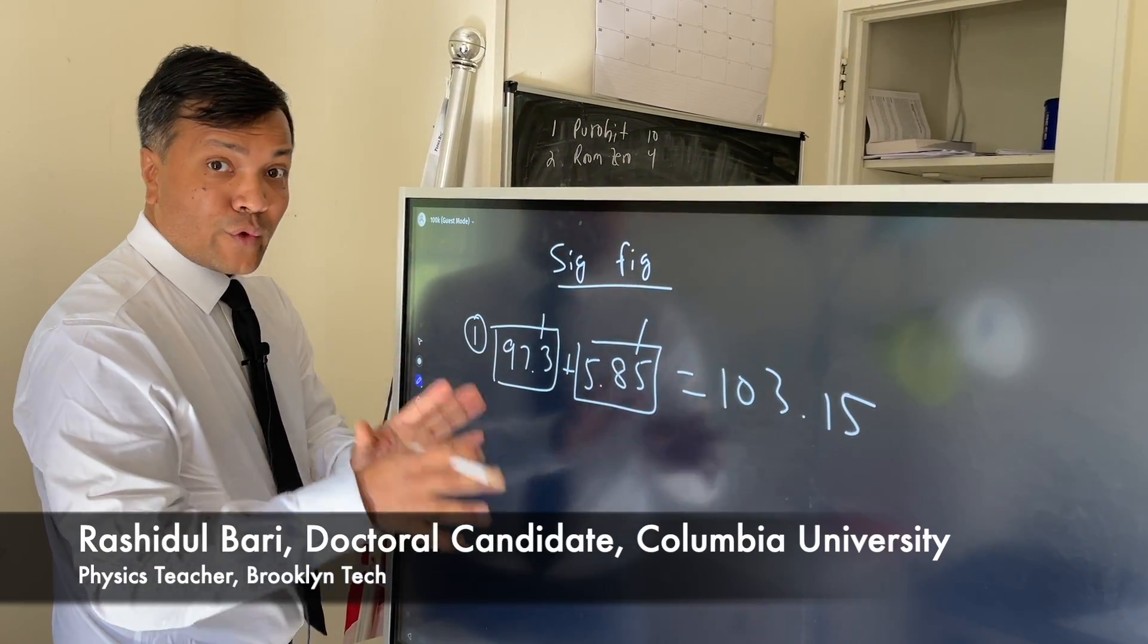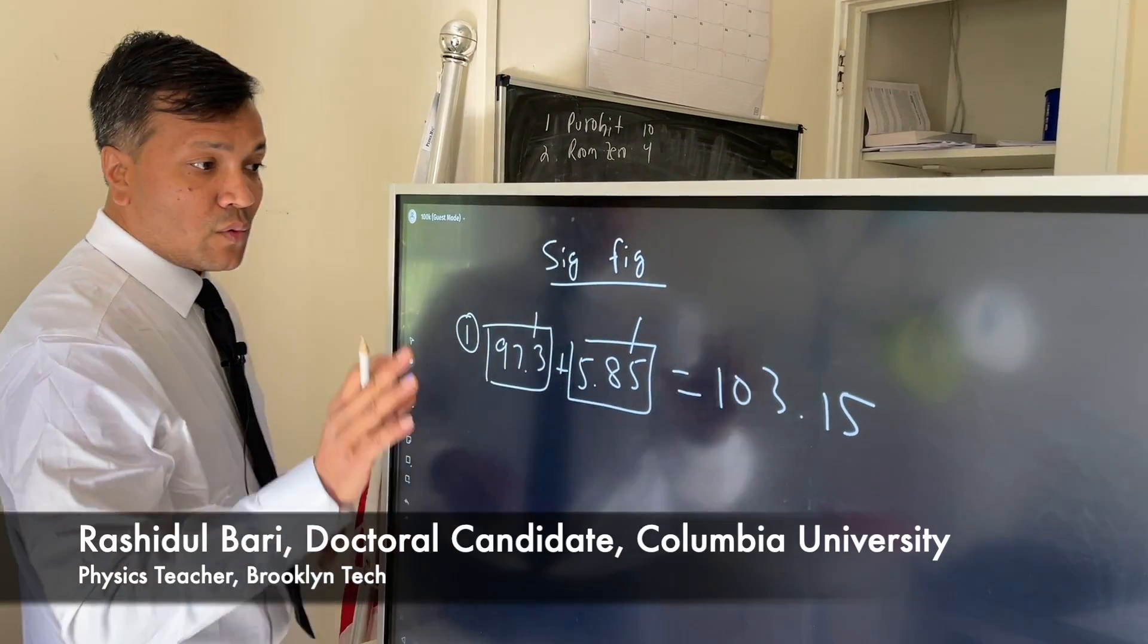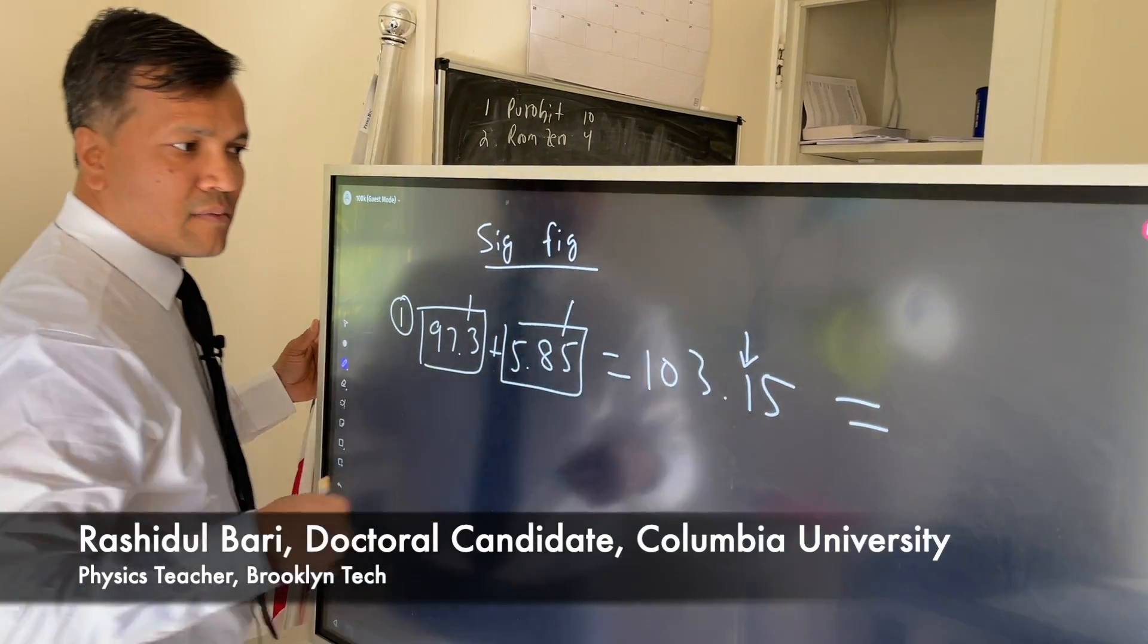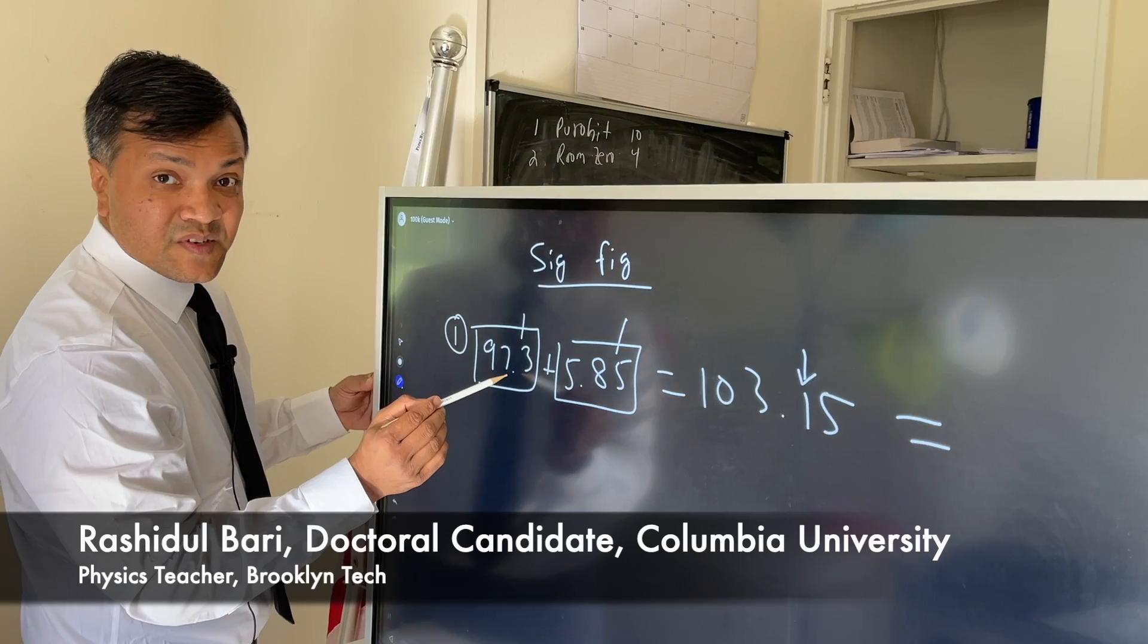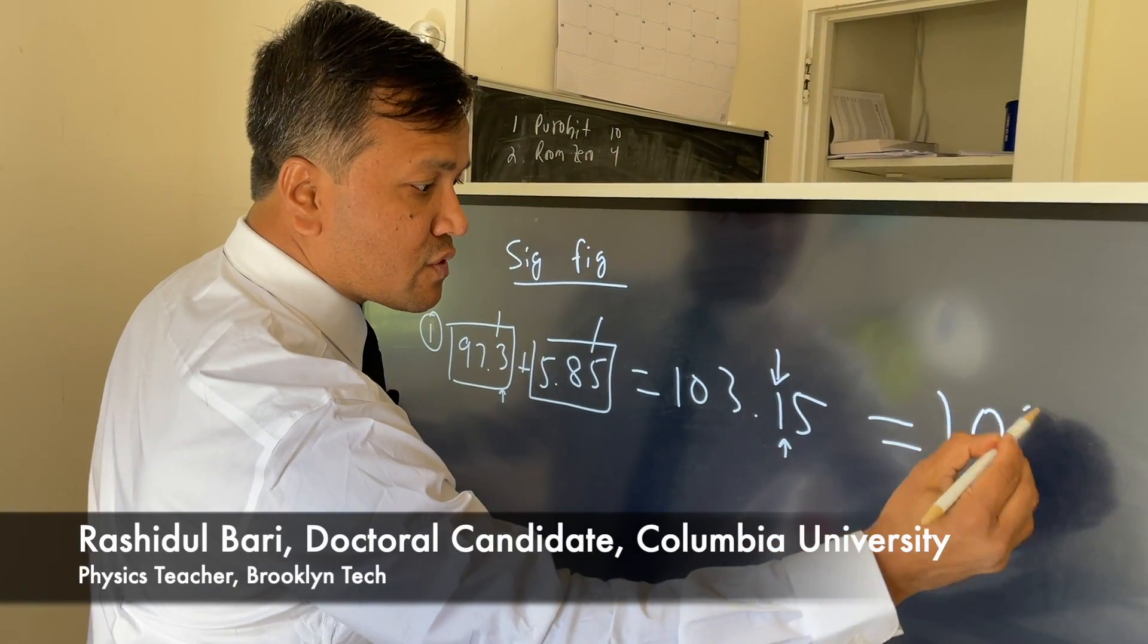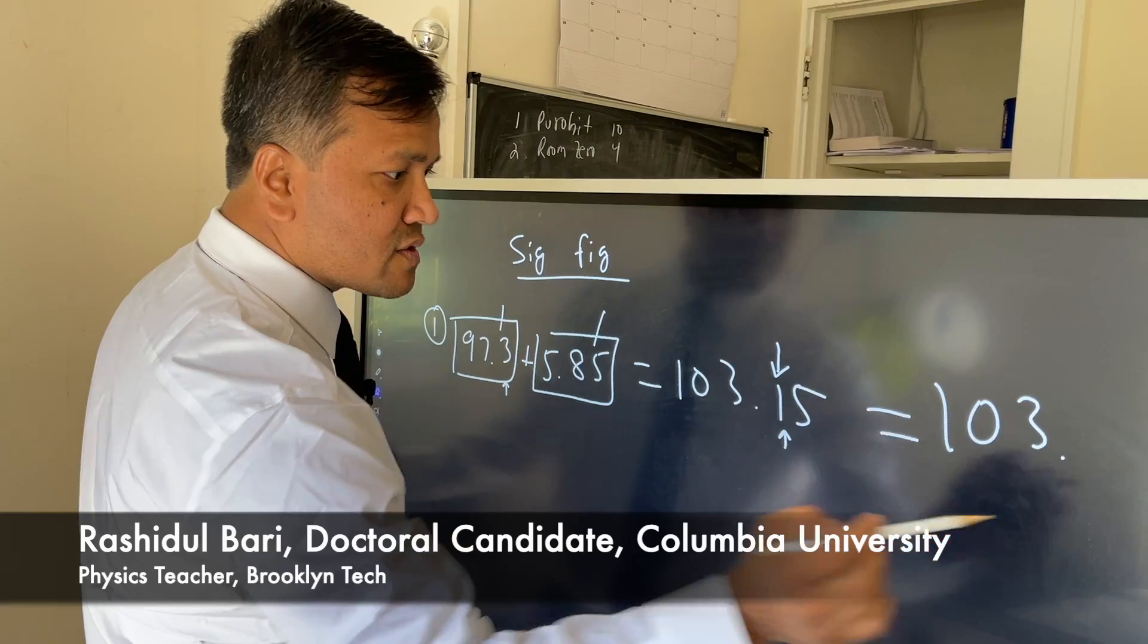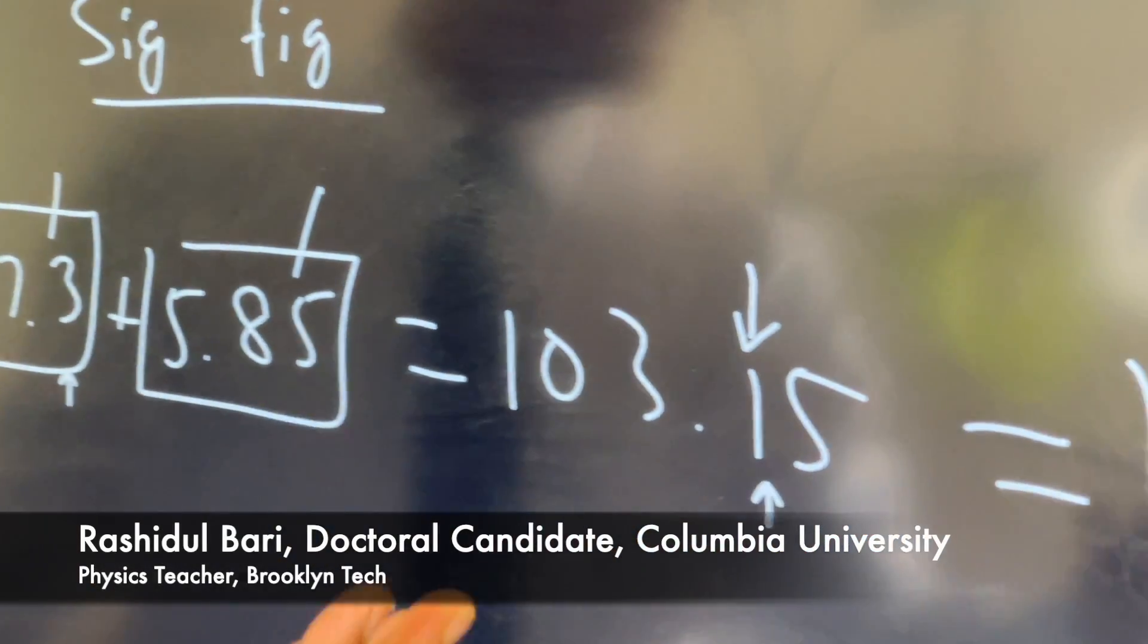When we add, we must go by the least precise one. That means we have to understand our target. The target is tenths because the least precise one has the tenths place. So we're going to write 103.1? No, that would be wrong. Why? Because this is five. If it is five or more, then you have to add one to the target. So 103.2.